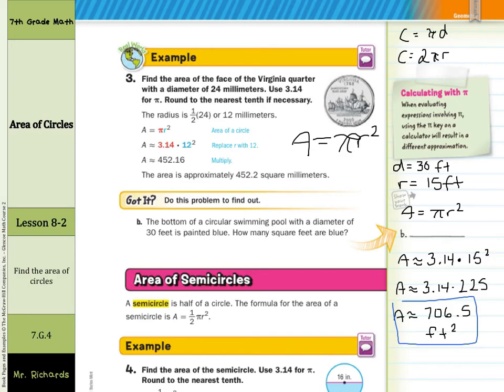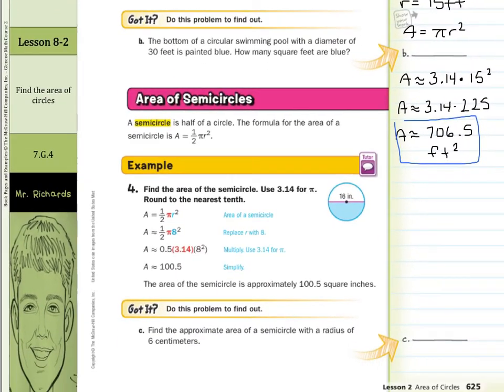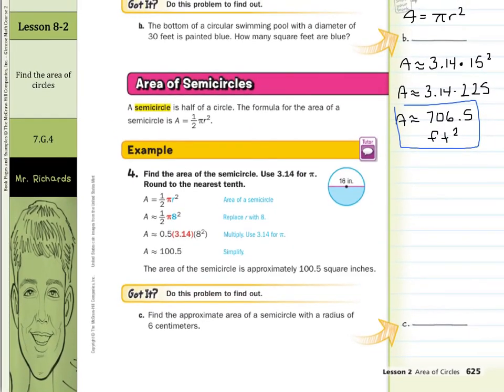Now what about area of semicircles? Well, a semicircle is a half circle. The formula for the area of a semicircle is 1 half times pi radius squared. So if the area of a full circle is pi r squared, the area for a semicircle or half circle is half times pi r squared. So in example four, find the area of the semicircle. Use 3.14 for pi. Round to the nearest tenth. Well, identify what we're given here in the circle. We're given a diameter of 16 inches. So the first thing we need to do is find the radius. Well, the radius is 8 inches. And that's exactly what we put into the formula here. 8 squared is 64 times 3.14 times a half. You get about 100.5 tenths.